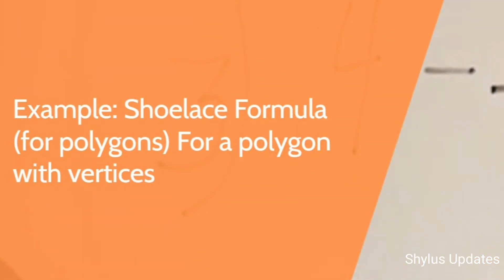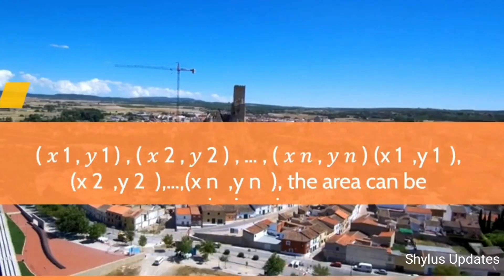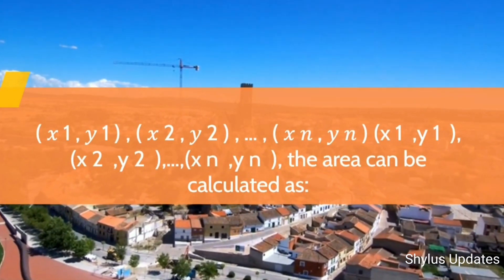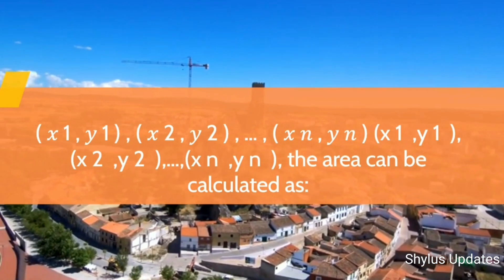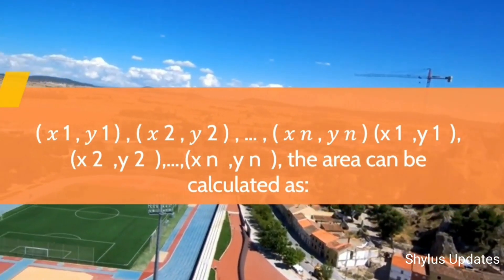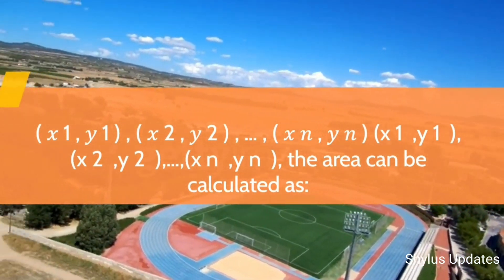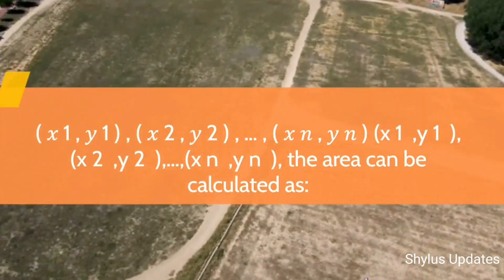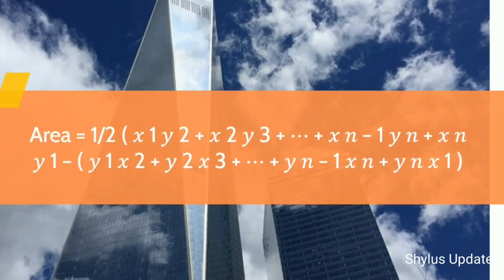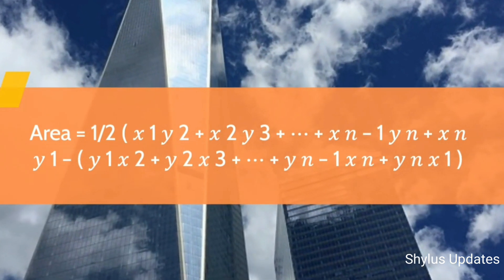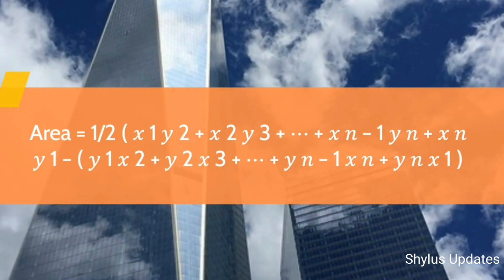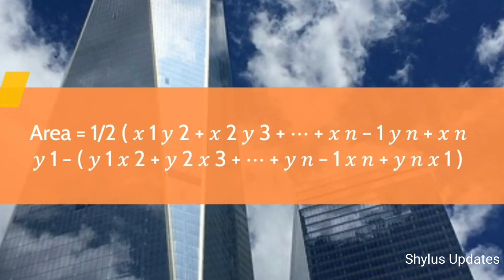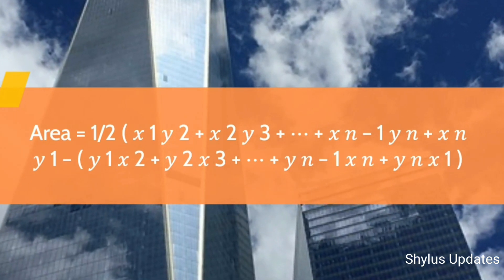For a polygon with vertices (X1, Y1), (X2, Y2), ..., (Xn, Yn), the area can be calculated using the Shoelace formula: Area equals one-half times the absolute value of the sum of (X1·Y2 − X2·Y1) + (X2·Y3 − X3·Y2) + ... + (Xn·Y1 − X1·Yn).